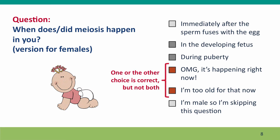The answer is it happened in the developing fetus, it sort of hung in there, and then it started actively happening again during puberty — one cell at a time. If you're premenopausal, if you're in your fertile years, then you would say, 'Oh my god, it's happening right now.'